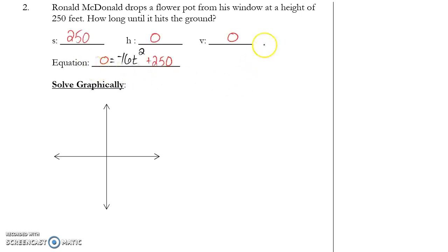Okay, so this is a drop problem. There is no mention of velocity at all. That means there is no velocity, and I just use h equals negative 16t squared plus s. Starts at 250, ends at the ground, which is 0. Why 1? Why 2? Now, before I go through, my y max here needs to be bigger than, I have 0 and 250. It needs to be bigger than 250.